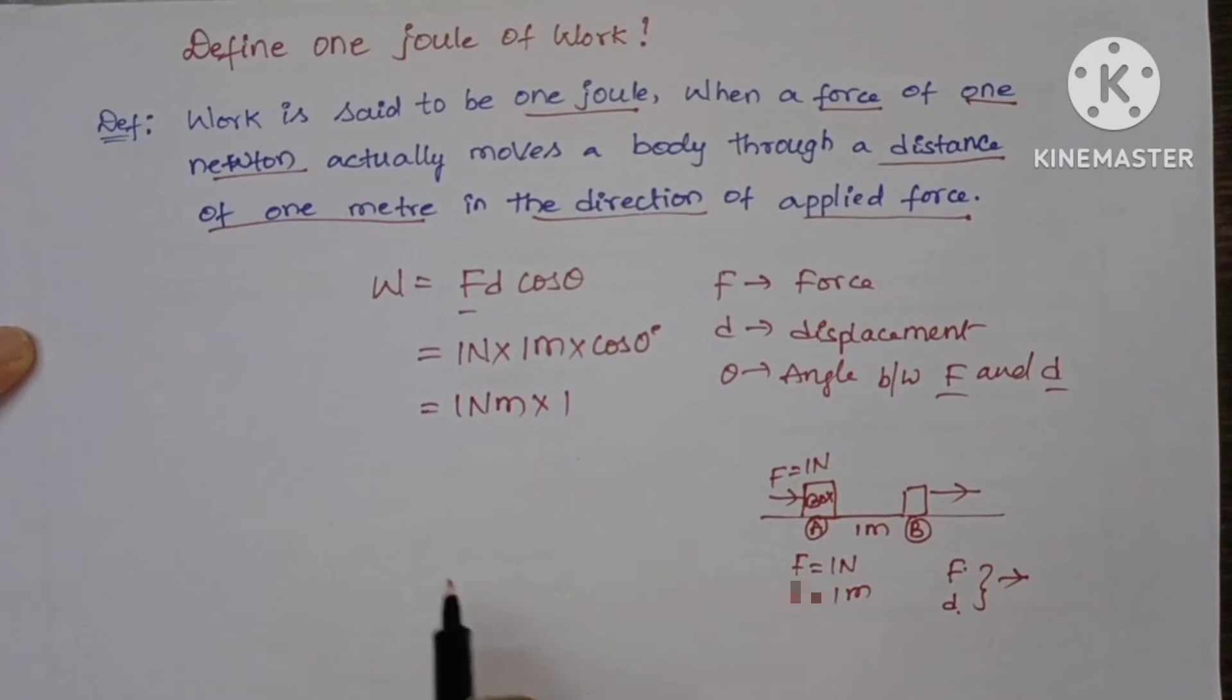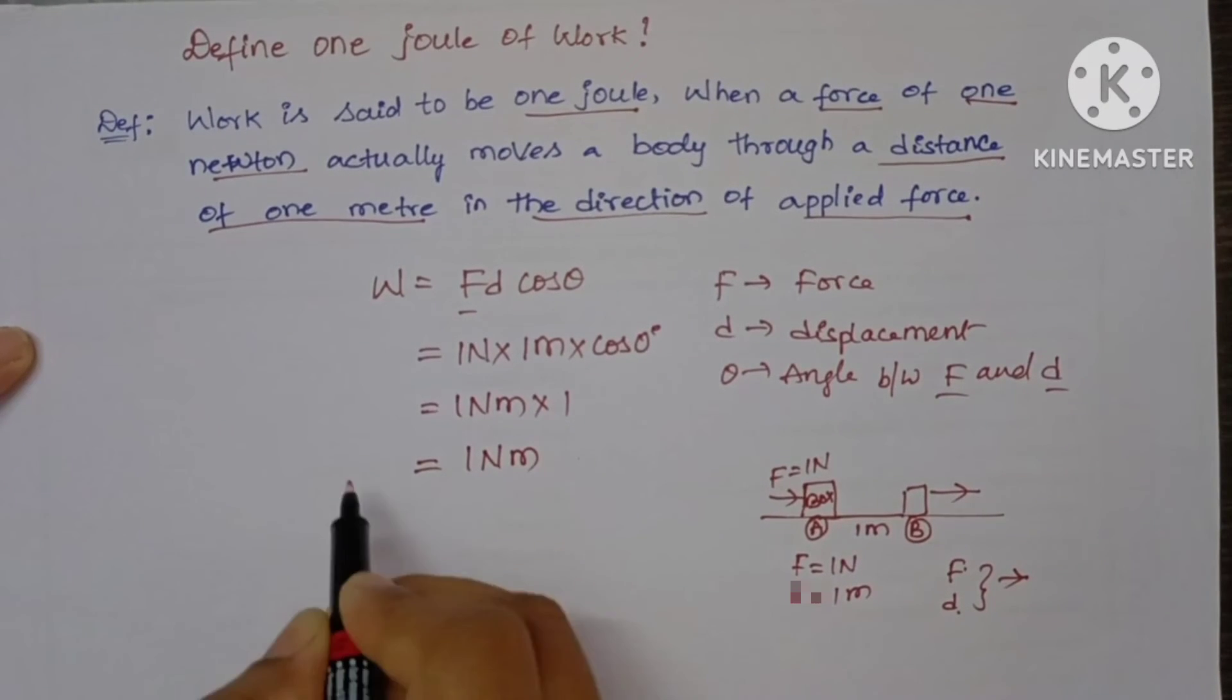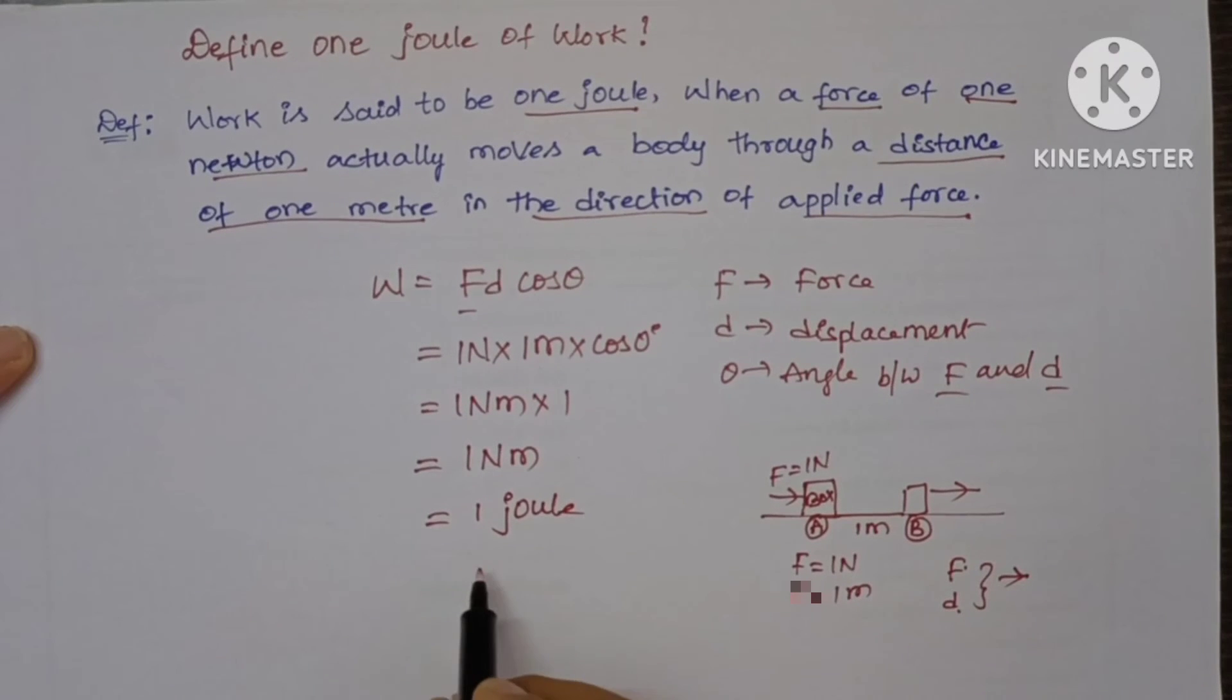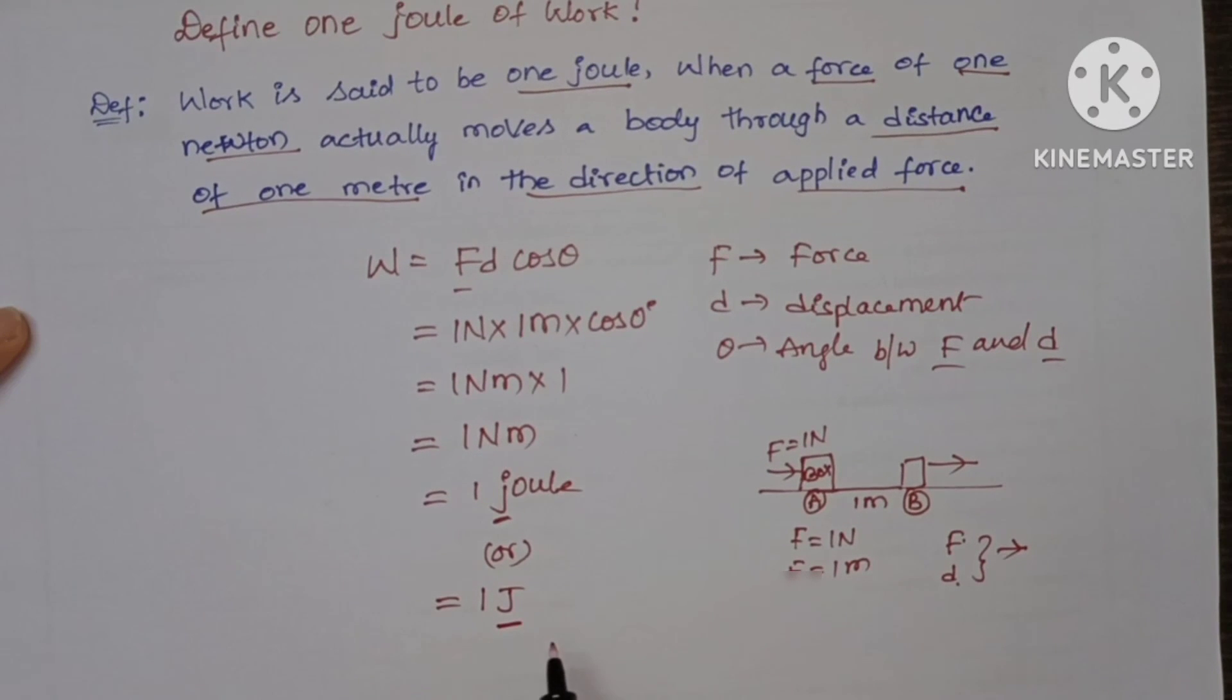So which is equal to 1 newton meter, so 1 newton meter is nothing but 1 joule. If you want to write the full form you have to start with small j. If you want to represent with only one letter you have to write with capital J.